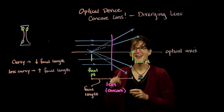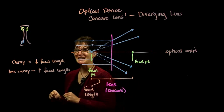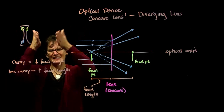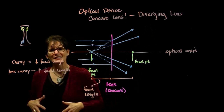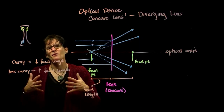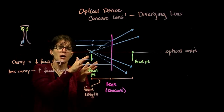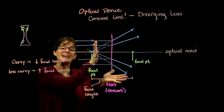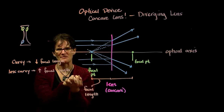So, concave lenses: they're shaped like an hourglass, they cave inward, and they're also known as diverging lenses because the refractive properties of that shape cause light rays to spread out as they enter the lens.